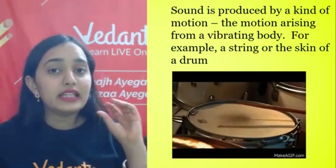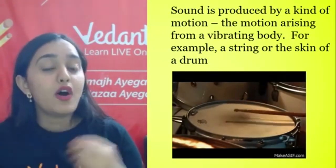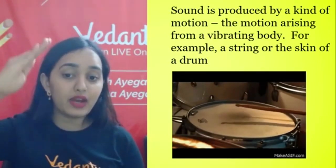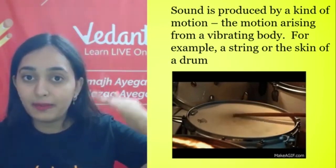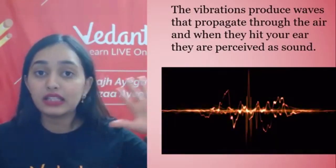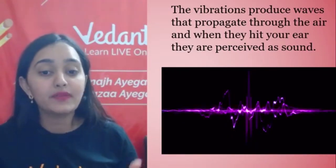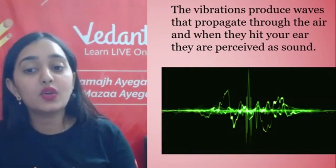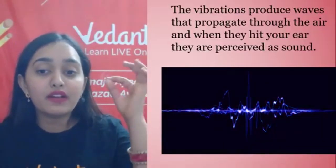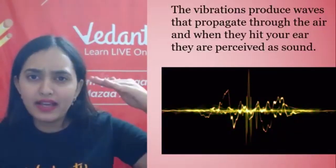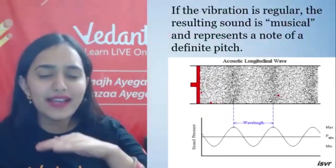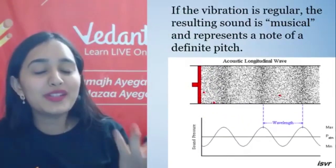For sound to be produced, we have to create motion, and the motion comes from a vibrating body. For example, when you click on the tablet, you can see that the surface vibrates — or the drum skin vibrates too. The vibrations are made in a wave, and the wave travels through the air into your ears so we can listen to sound. If the sound is regular, we can listen to music. If it's just random noises — dumb, dumb — it doesn't sound musical or soothing.